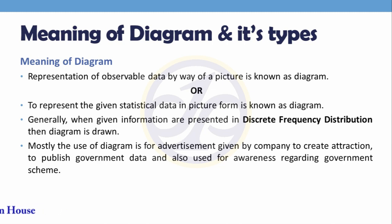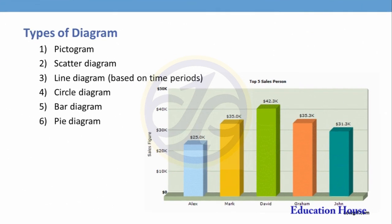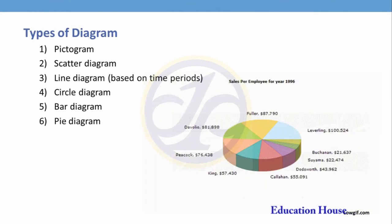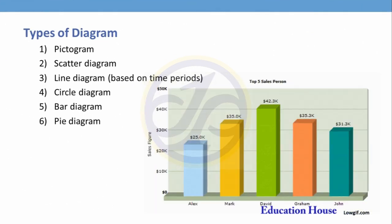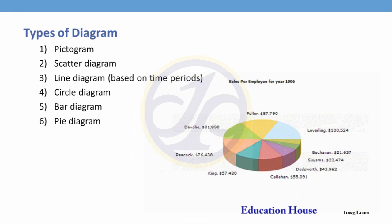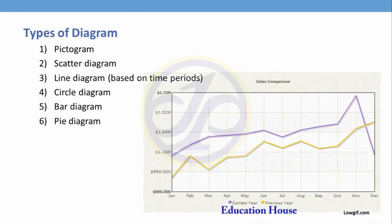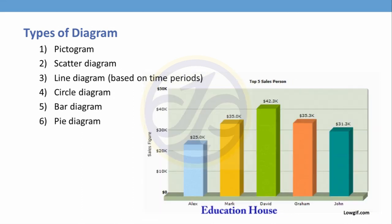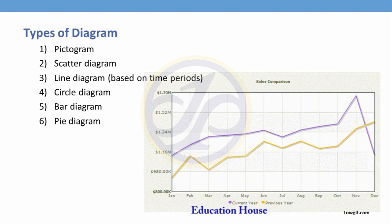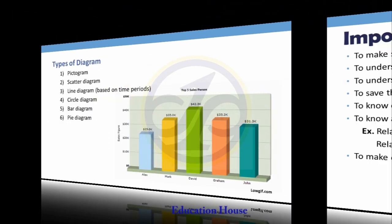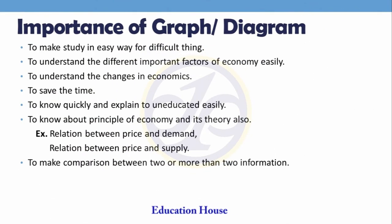Diagrams are used for advertisement purposes and public awareness. Sometimes the government also issues diagrams for public awareness. Various types of diagrams include pictogram, scatter diagram, line diagram based on time duration or period, circle diagram, bar diagram, and pie diagram.